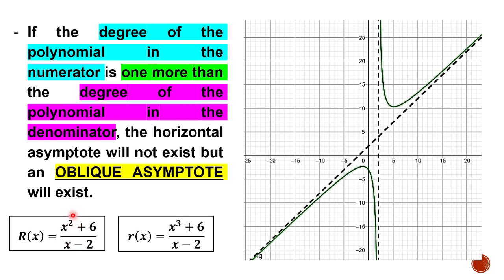The degree on top is 2, and the degree on the bottom is 1, so the difference is only one. In rational function number 2, there is no oblique asymptote because the degree on top is two more.